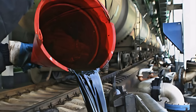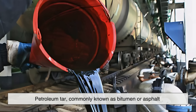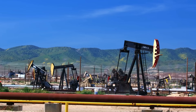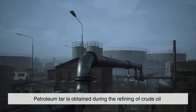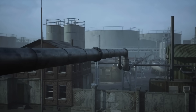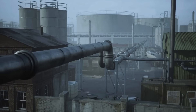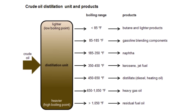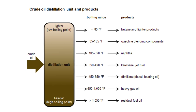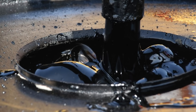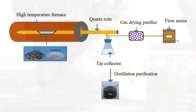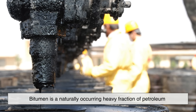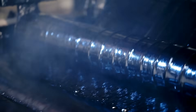The third primary source of tar is petroleum tar, commonly known as bitumen or asphalt. This type of tar is derived from crude oil and is mainly used in road construction and waterproofing applications. Petroleum tar is obtained during the refining of crude oil, specifically during the process of distillation and vacuum distillation, where the heavier components of crude oil are separated from lighter fractions such as gasoline and diesel. What remains is a thick, viscous residue known as bitumen. Unlike wood tar and coal tar, which are produced through thermal decomposition, bitumen is a naturally occurring heavy fraction of petroleum. It can be further processed to achieve different grades of viscosity and hardness, depending on its intended use.